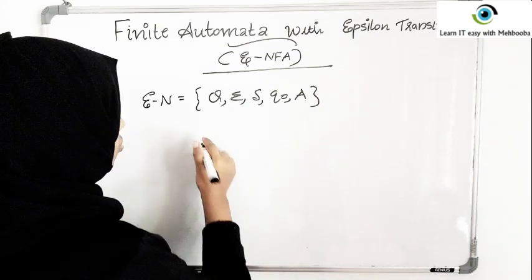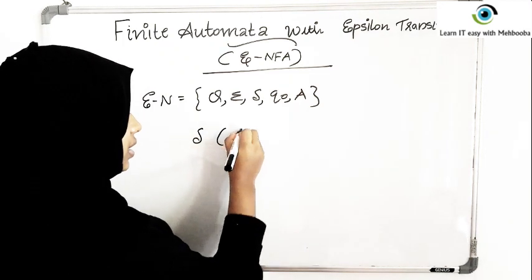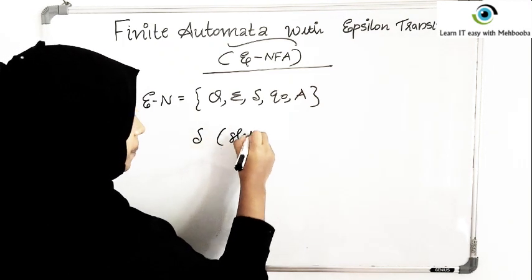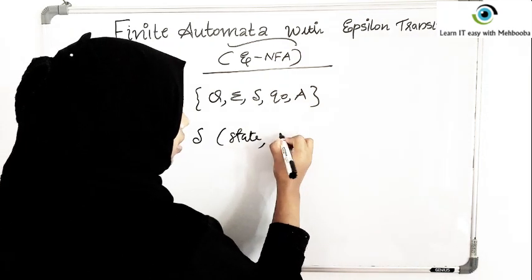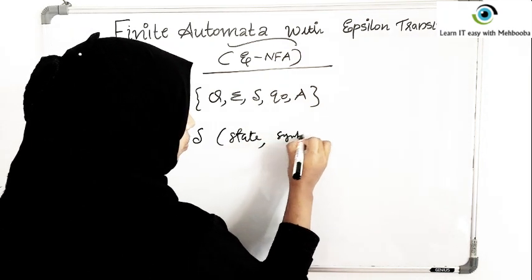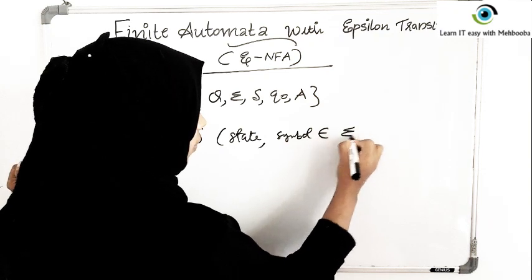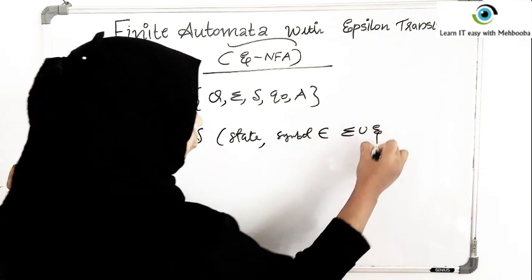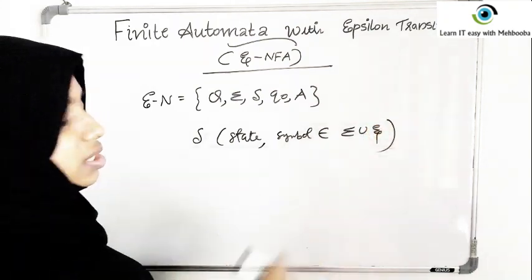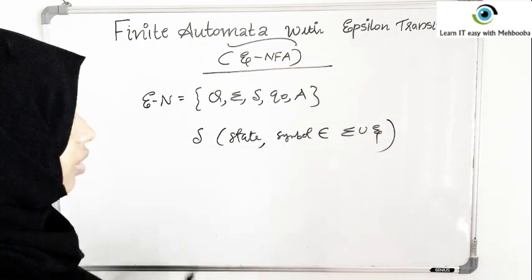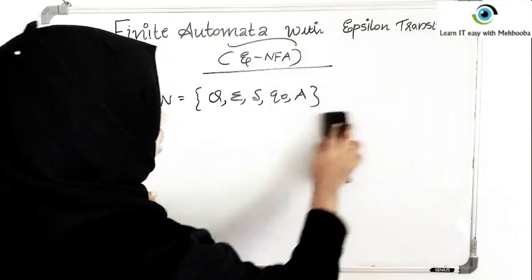The only difference is that the transition function can take as its arguments any state and any symbol from sigma union epsilon. That is, epsilon can also act as an input symbol — meaning even without giving any input, you can move from one state to another.